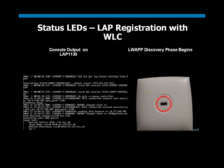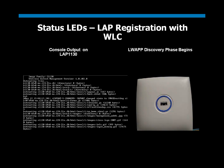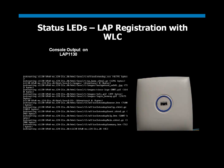In our example, the access point finds and joins the controller. As a next step, the access point downloads an image from the controller. This status is indicated by a blinking dark blue on the status LED. Let's wait until the access point downloads the image from the controller.